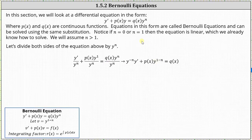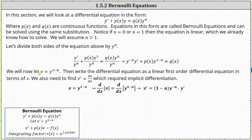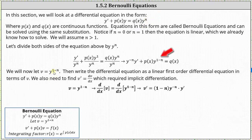Now we'll perform a substitution by letting v equal y to the power of one minus n, where n is the original exponent on the y term on the right before we divide it through by y to the power of n. Also notice y to the power of one minus n is the y term being multiplied by p of x in the equation, once we divide it through by y to the power of n.